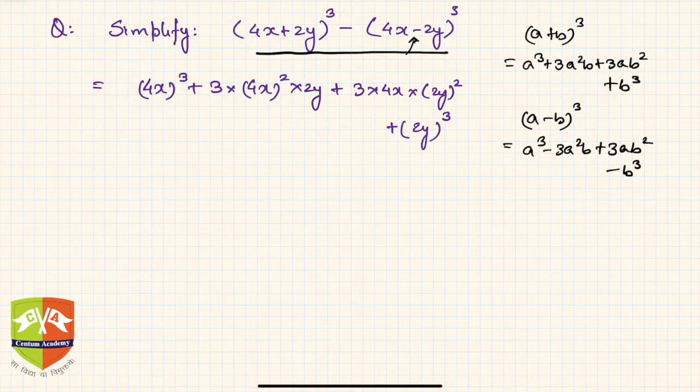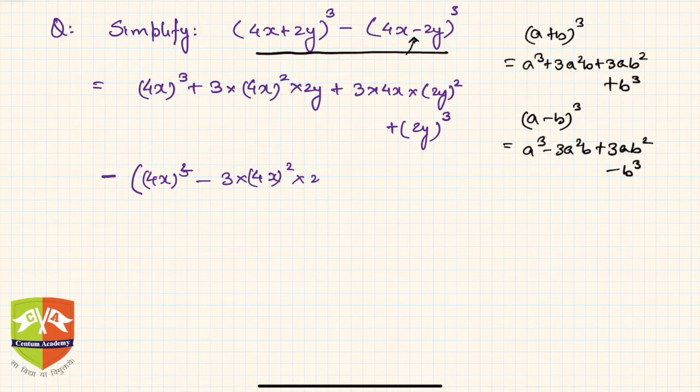And if you open the second one, there's a minus sign outside the bracket, so it's (4x)³ minus 3 times (4x)² times 2y plus 3 times 4x times (2y)² minus (2y)³ within brackets, correct.